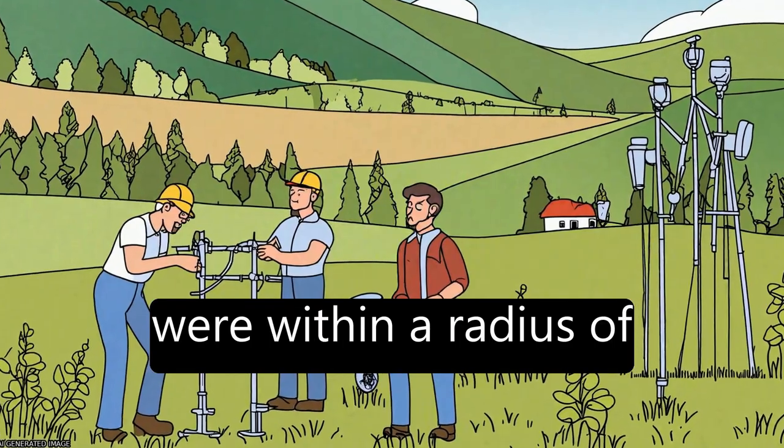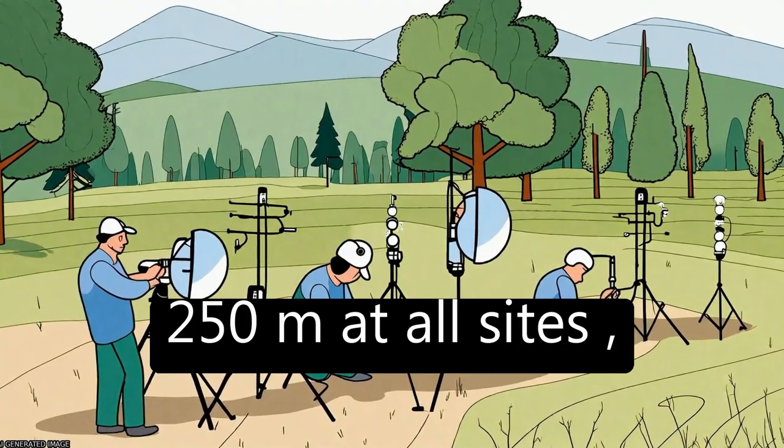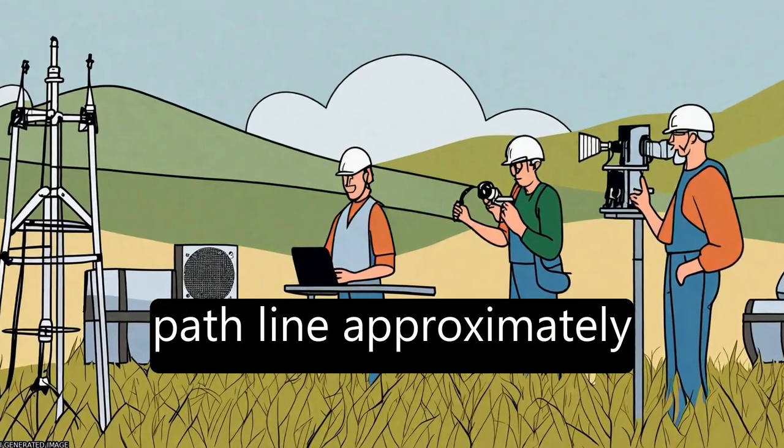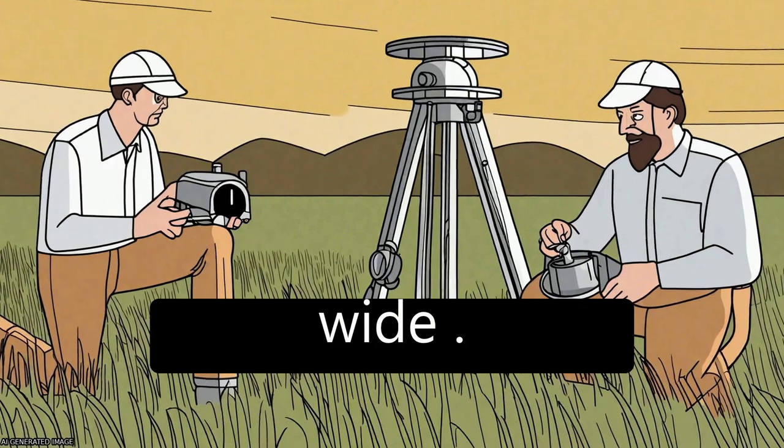The main EC source areas were within a radius of 250 meters at all sites, while the main LAS source area stretched along a path line approximately 2,000 meters long and 700 meters wide.